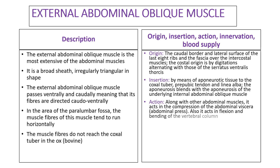The muscle acts along with other abdominal muscles in compressing the abdominal viscera in what is referred to as the abdominal press, during processes such as defecation, urination, and also parturition. It also acts in the flexion and bending of the vertebral column.